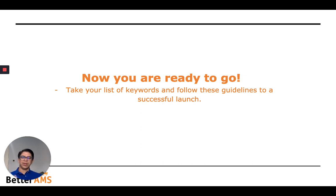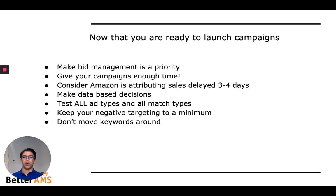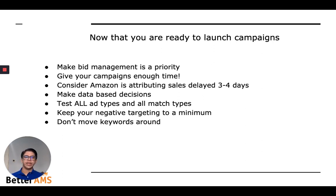So now you're ready to go. Take your list of filtered keywords, and I'll give you guidelines to a successful launch. Now that you're ready to launch campaigns, make bid management a priority. You want to make sure you control your bids — be smart with your starting bids. Don't go too aggressive, don't go too low. Try to stay near the suggested bid, and if you're seeing better performance, try to raise the bid a little bit. If not, reduce the bid accordingly. Give your campaigns enough time — make sure that you don't pause campaigns or start optimizing bids after just 24 hours.